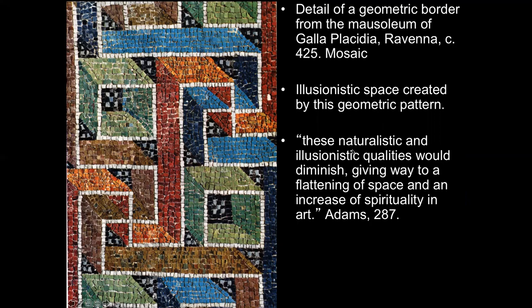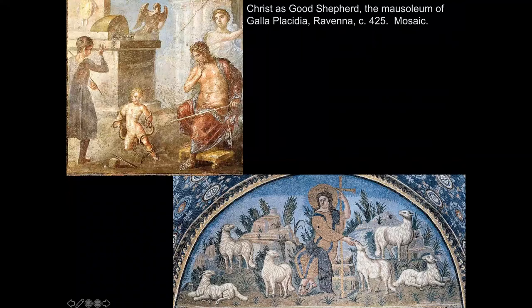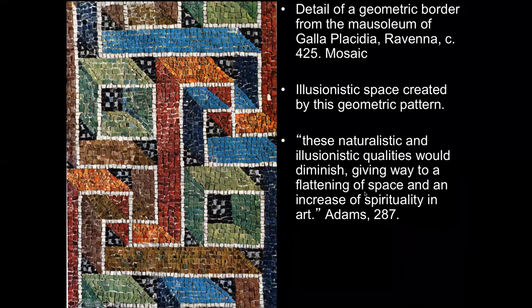These naturalistic and illusionistic qualities would diminish, giving way to a flattening of space and an increase of spirituality in art. Previously the emphasis was on earthly concepts of Christ — he's taking care of the meek, literally standing on earth, sacrificing himself — reflecting how Romans and Greeks portrayed their gods interacting with humans. That's going to disappear. The art will respond by trying to display something unearthly, transcendent — thinking about the afterlife and a spiritual world instead of the earthly one.